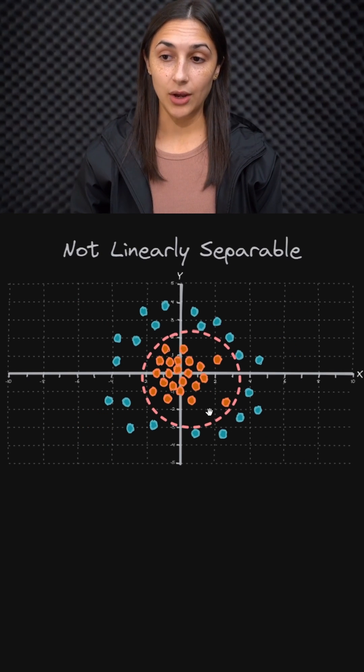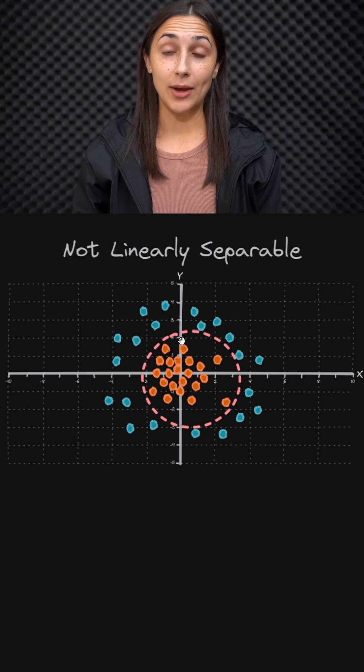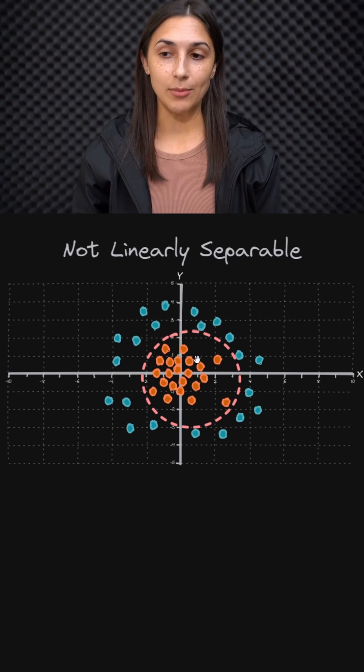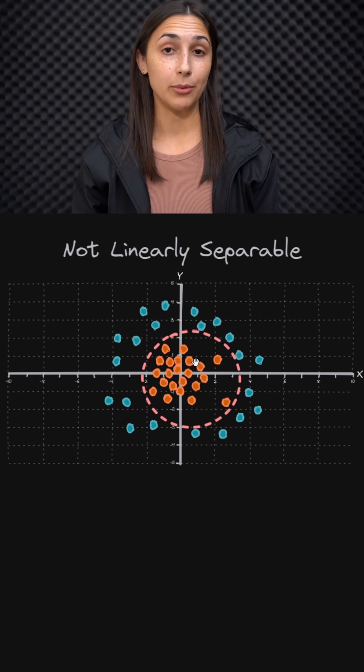We need a more complex separation and a line won't cut it in this case. And therefore, if our data is modeled this way, then it's not suitable for a single-layer perceptron.